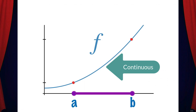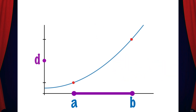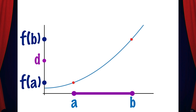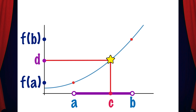Here we have a function f which is continuous on the closed interval a to b, and on the y-axis we have d, which is a number that lies between f(a) and f(b). What the Intermediate Value Theorem says is that there's a number x equals c in the open interval a to b for which f(c) equals d.